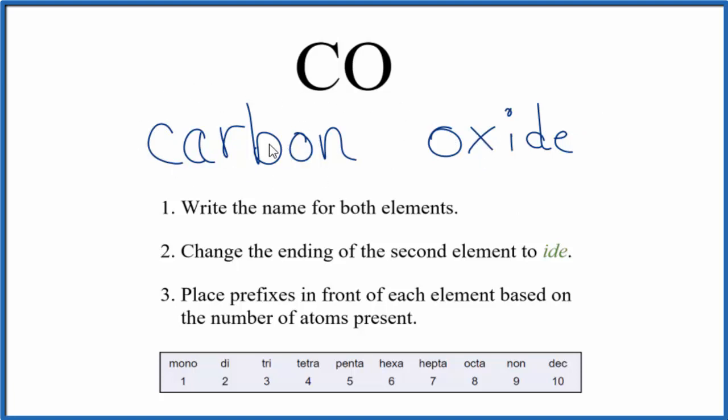We do need a capital C since this is the first element in the name. For the oxide, we only have one oxygen. It's not written, but we assume there's only one. So we put 'mono' in front of oxide.